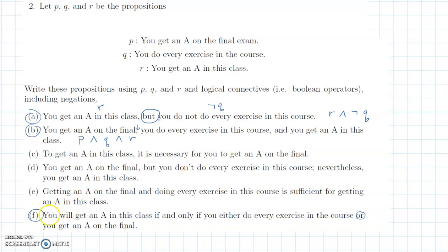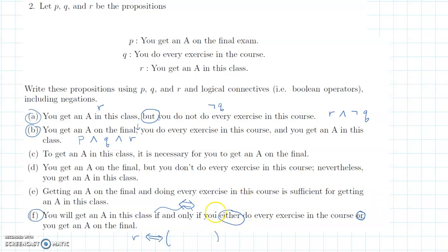For part F: 'You will get an A in this class if and only if you either do every exercise or you get an A on the final.' The 'if and only if' tells us to use the biconditional. The 'either...or' is an exclusive or, so we write: R if-and-only-if (Q ⊕ P), where ⊕ is the circle-plus for exclusive or.